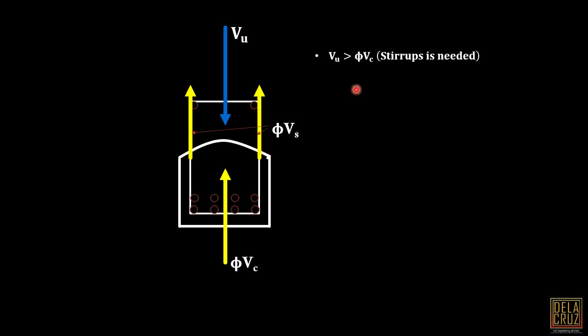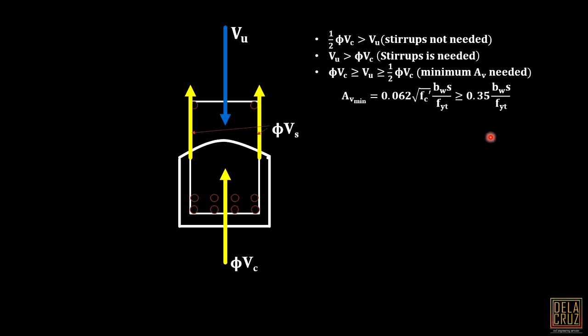That's the first case. Now we have this case - when half of phi VC is greater than VU, the stirrups will not be needed. Stirrups are not necessary. The third case, when VU is in between phi VC and half of phi VC, the code says minimum area of the stirrups is needed. The formula is here, given in the code.